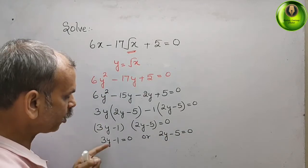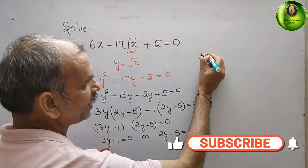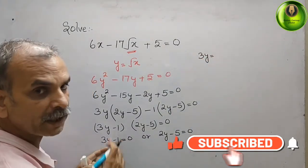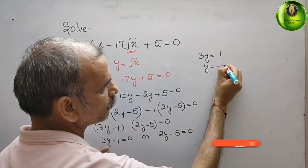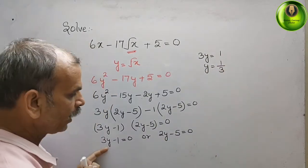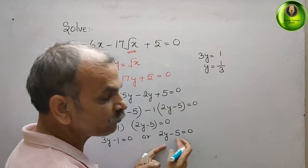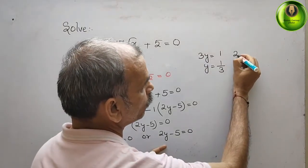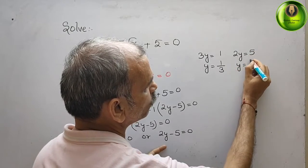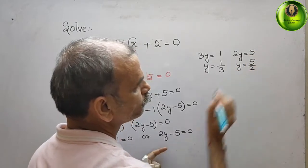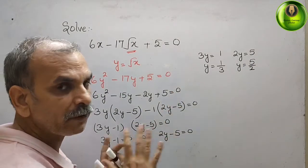Solving each: from 3y minus 1 equals 0, we get y equals 1 by 3. From 2y minus 5 equals 0, we get 2y equals 5, so y equals 5 by 2.